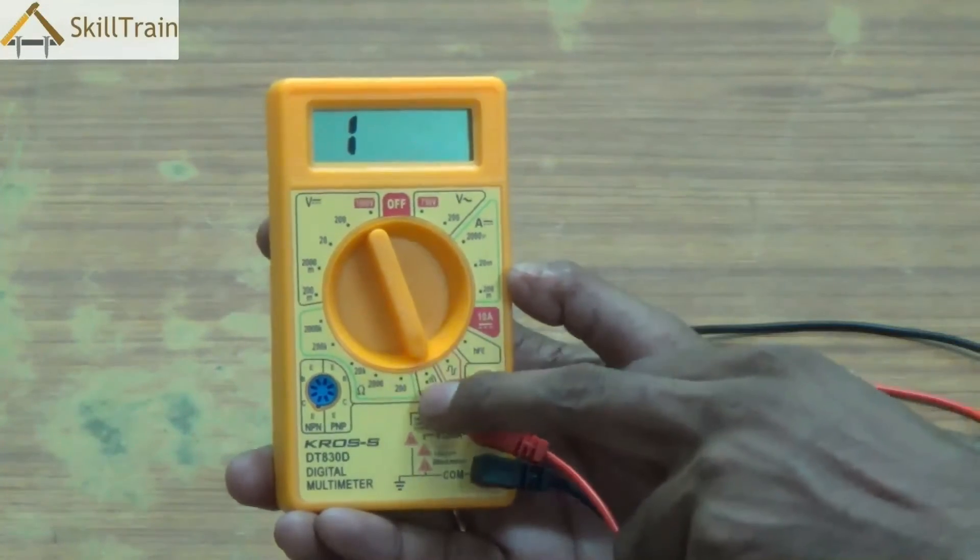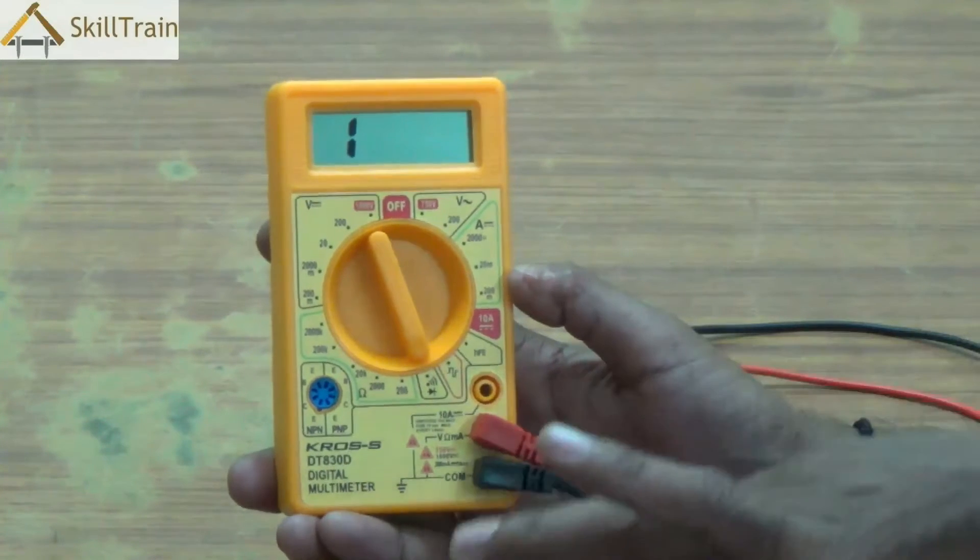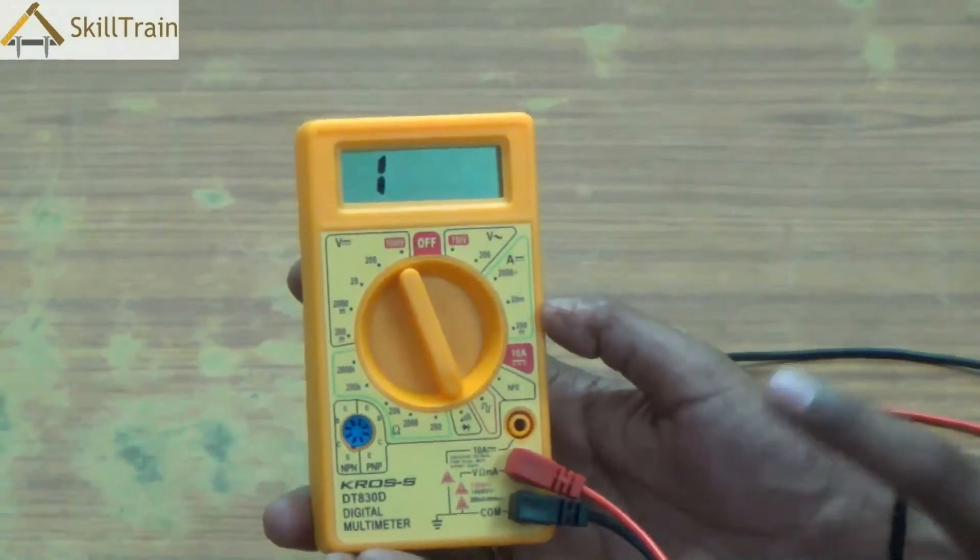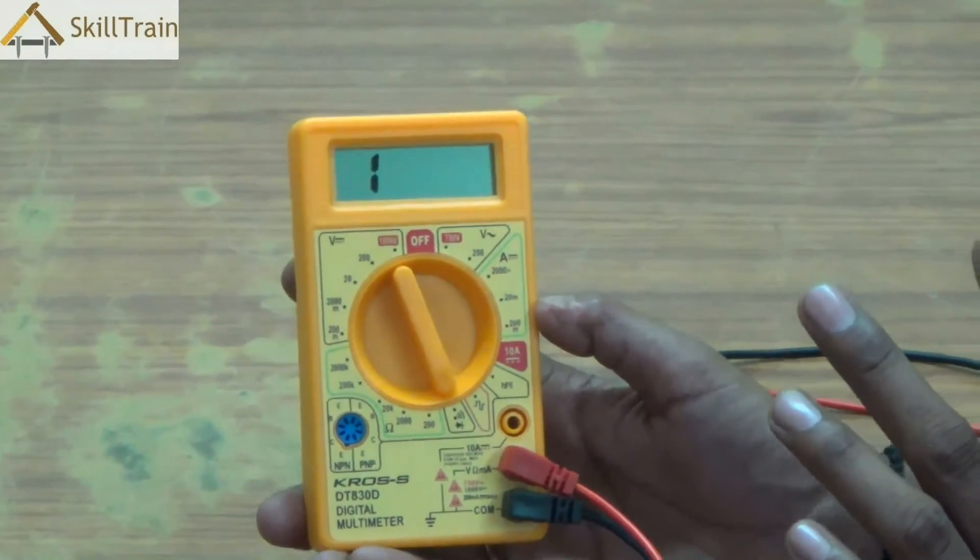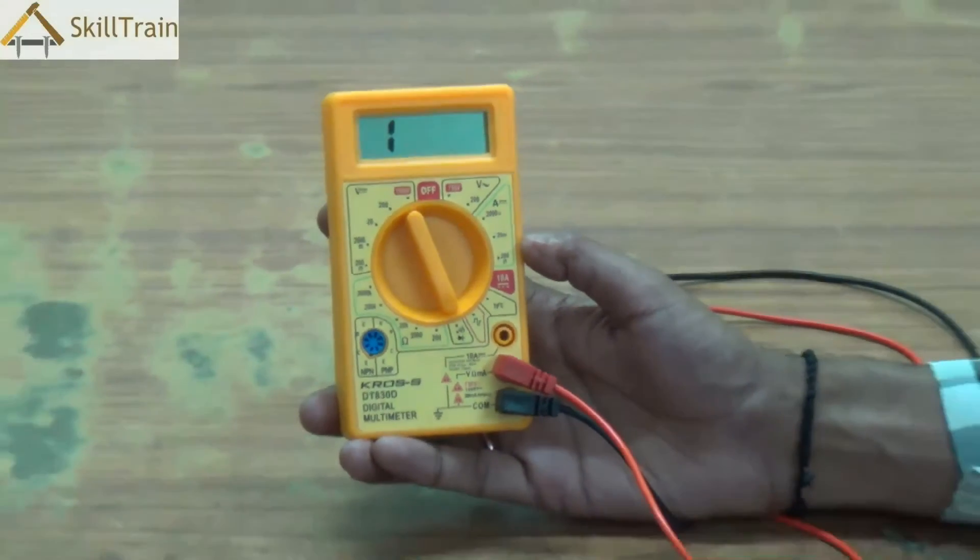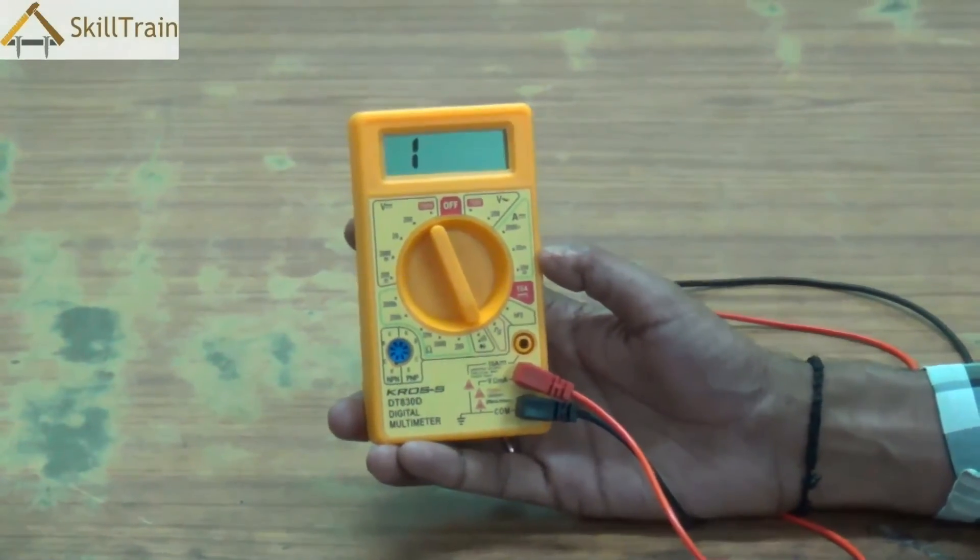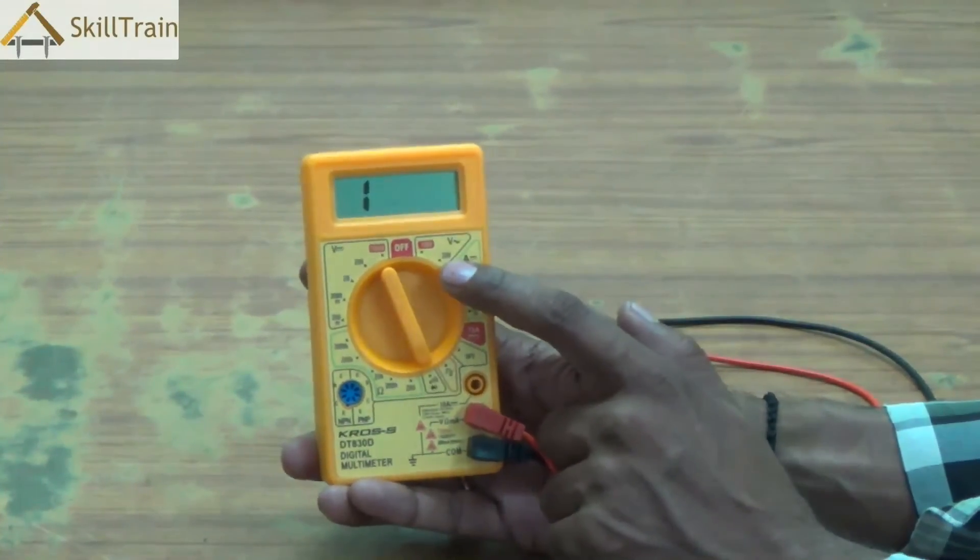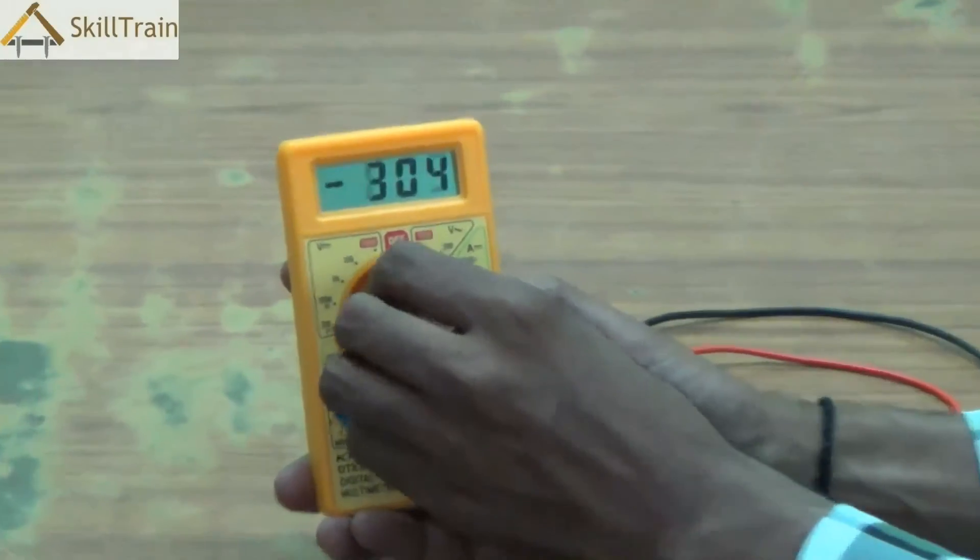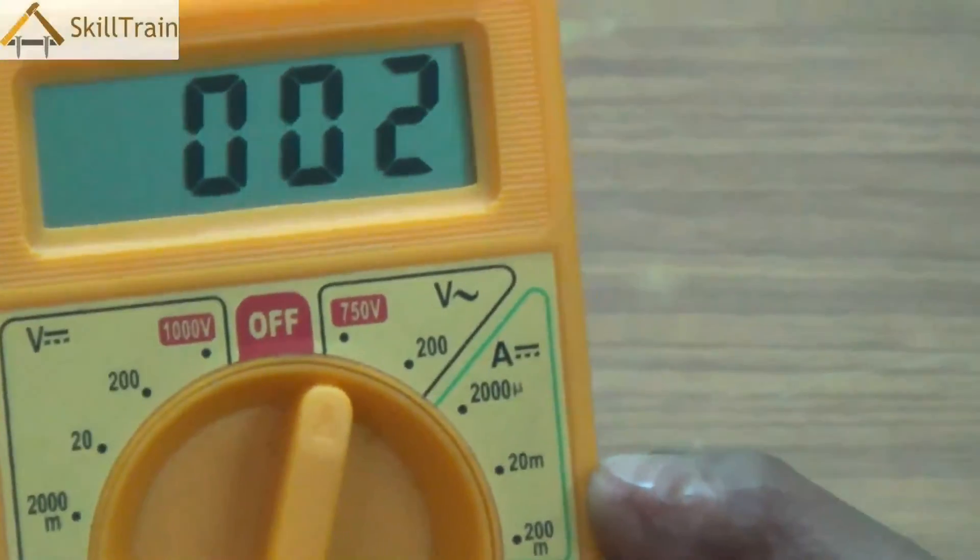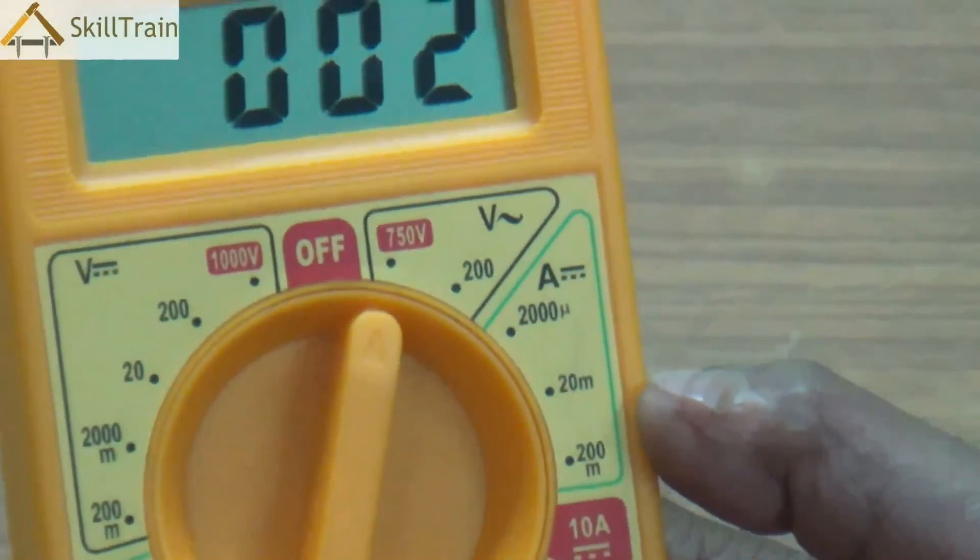This is also used while doing tracing on a printed circuit board to check whether the two points are connected properly. Now let's try and understand how we can check AC and DC voltage. At home, typically the voltage that we have is between 220 or 230 volts. We will turn the knob now and place it at the 750 volt AC point and we will connect this to the main power plug to check the voltage.